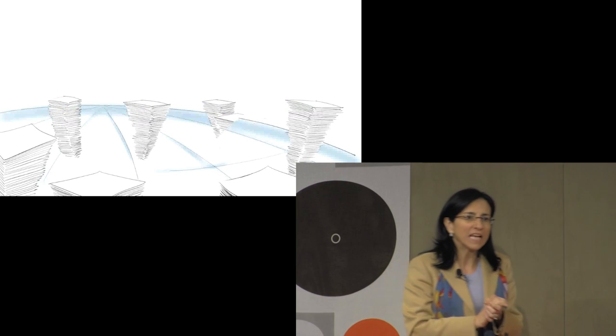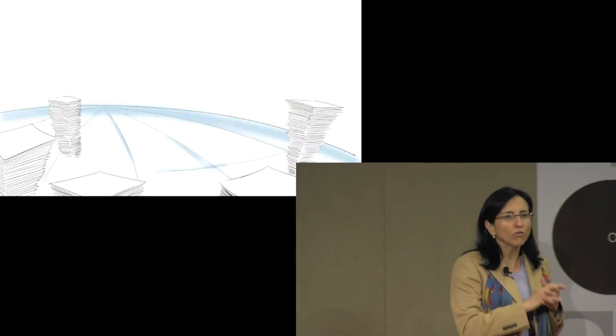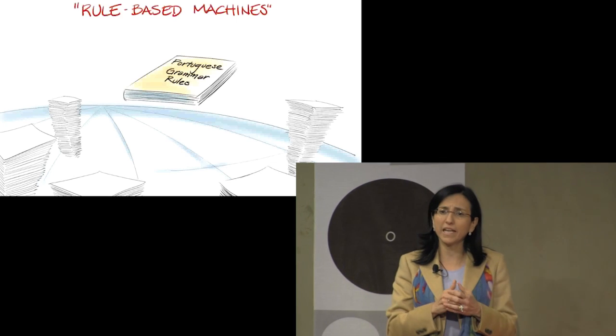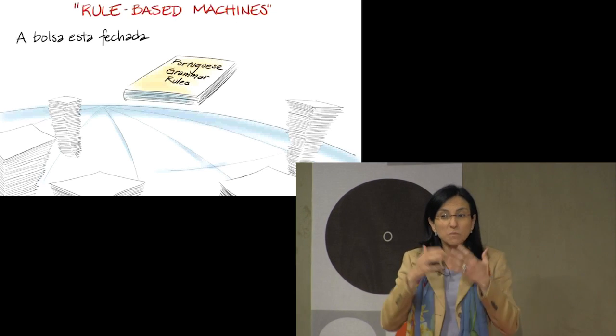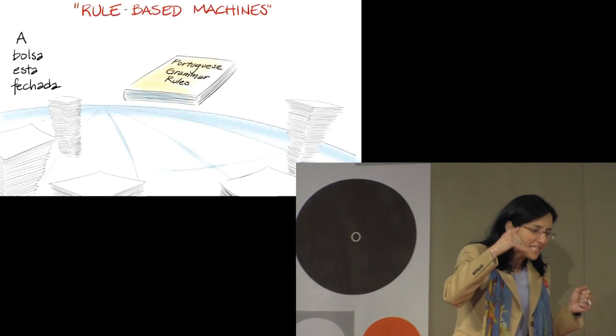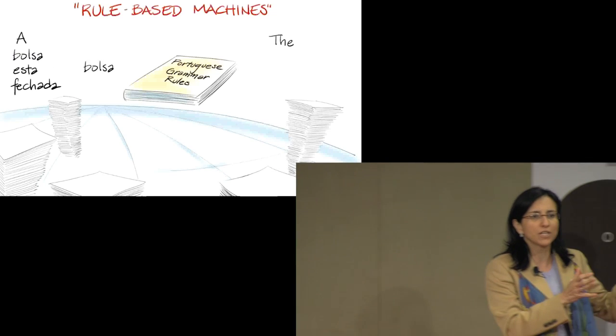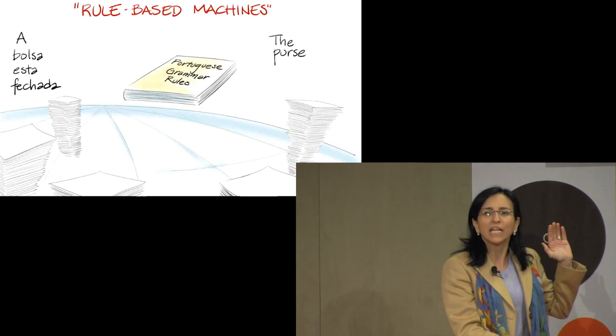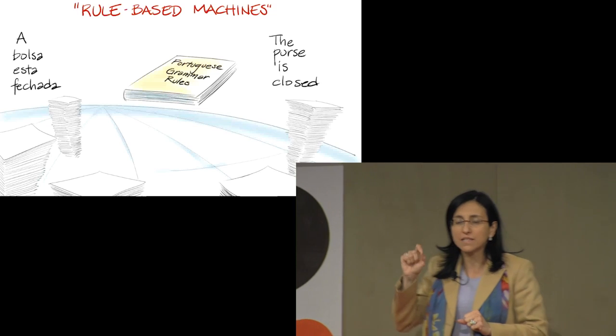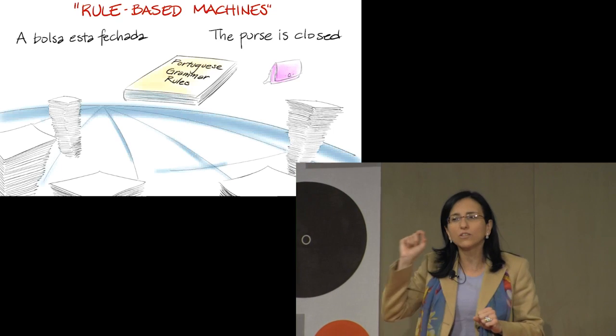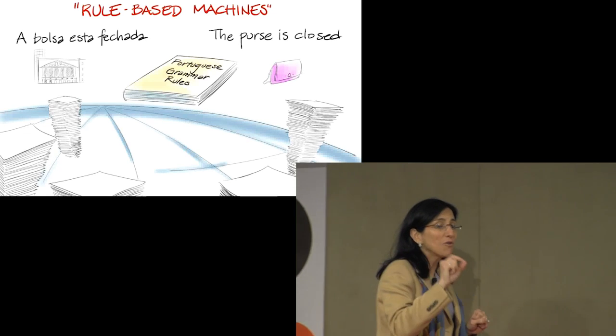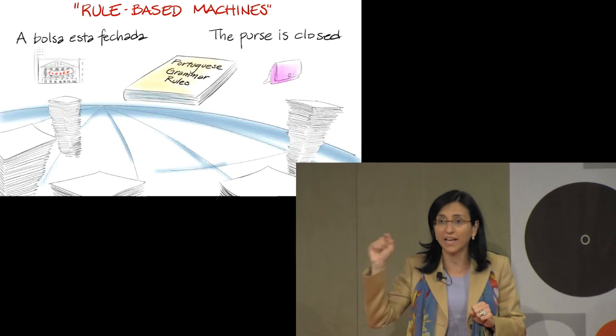Consider for example the traditional rules-based machine for automating the translation of content between languages. These applications typically use grammar rules specific to the source language to break a sentence into words, translate these words into the target language, and then assemble the words in a new sentence. And that's exactly how the Portuguese sentence 'a bolsa está fechada' is translated to the English sentence 'the purse is closed' when in a financial setting the most common usage translates to 'the stock exchange is closed.'